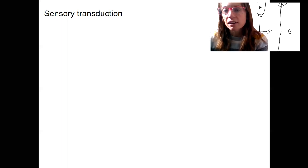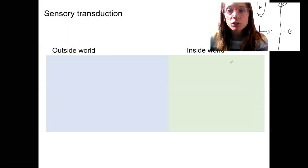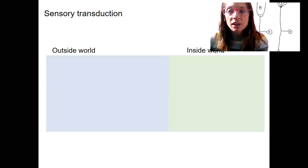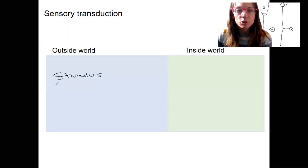So we've got here our outside world and our inside world. And in the outside world, we're going to have some sort of stimulus. So this could be touch, light, sound, etc.